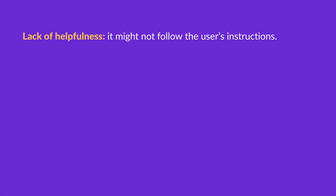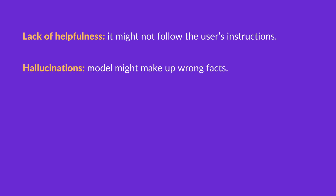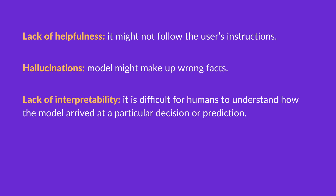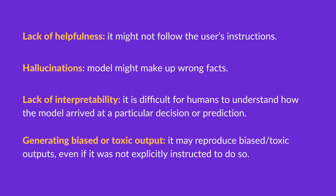Some of the problems you can run into when generating text with GPT-3 are lack of helpfulness — it might not follow the user's explicit instructions — or it might hallucinate, meaning the model might make up non-existing or wrong facts. You might also run into lack of interpretability; it is difficult for humans to understand how the model arrived at a particular decision or prediction. And finally, there could be the problem of generating biased or toxic output.